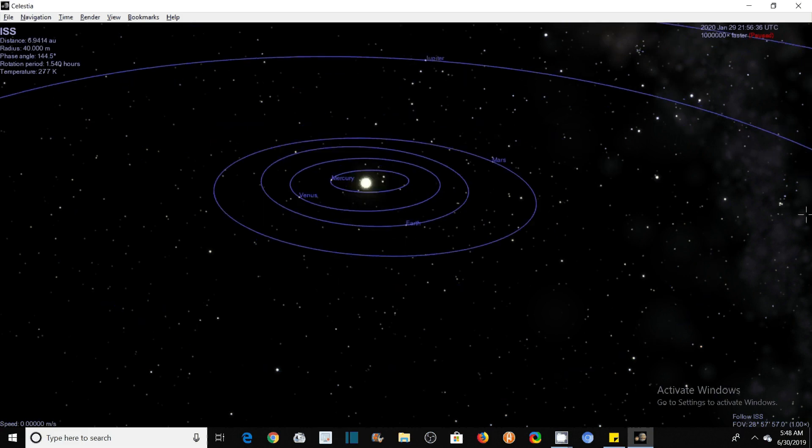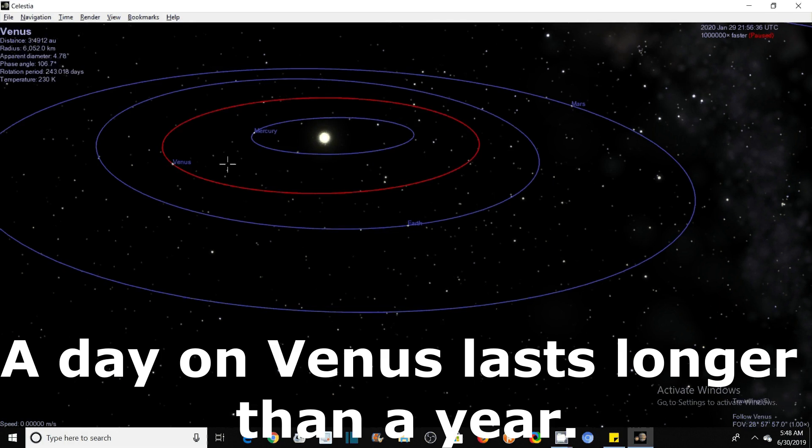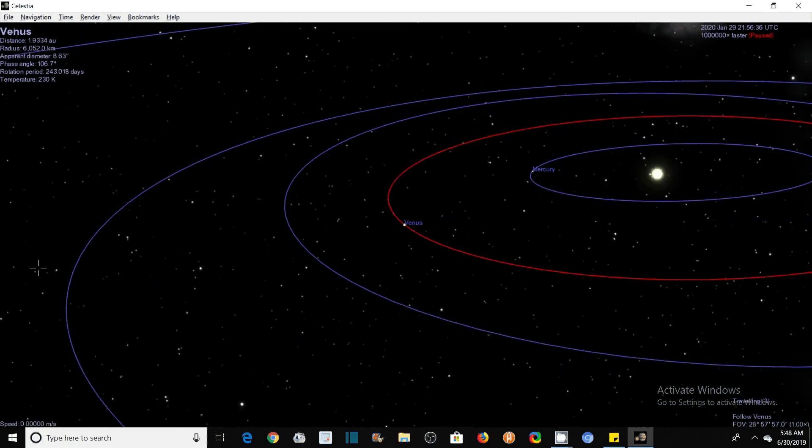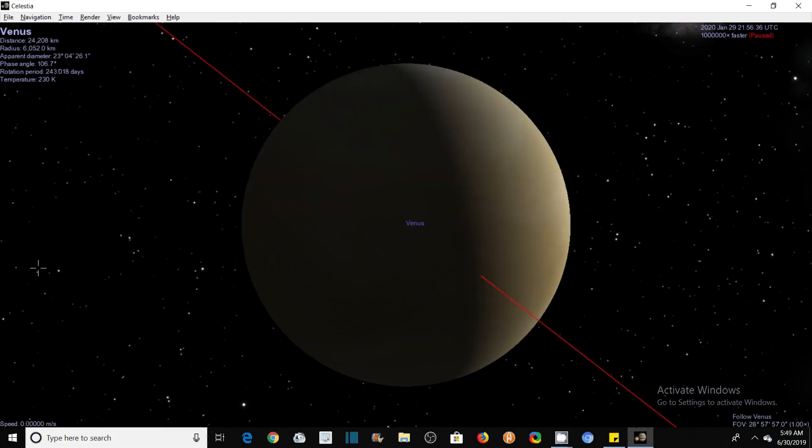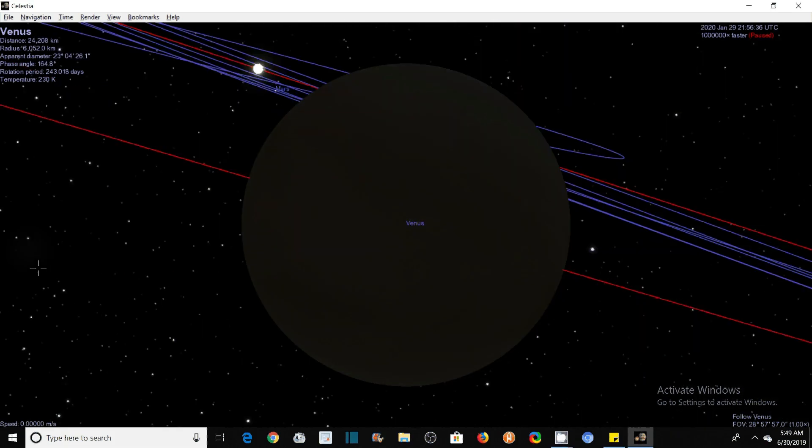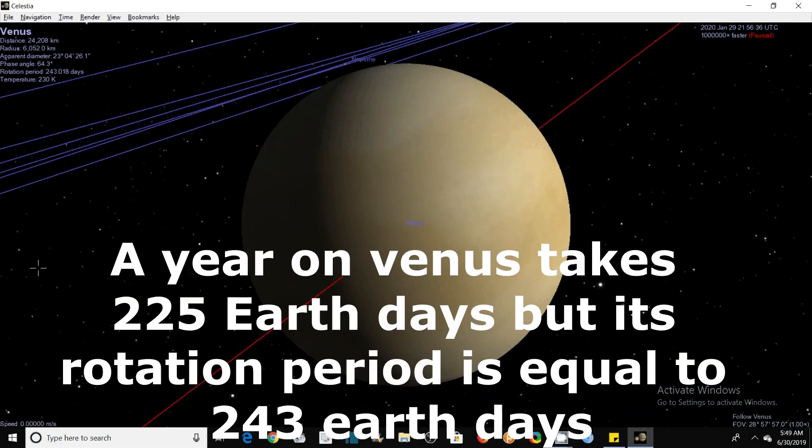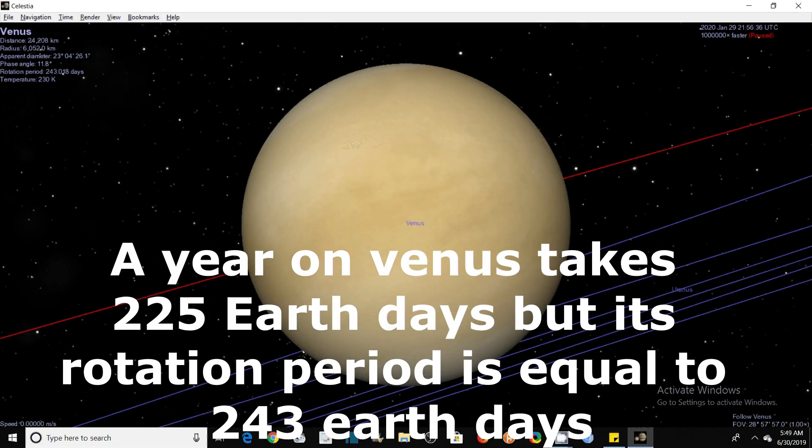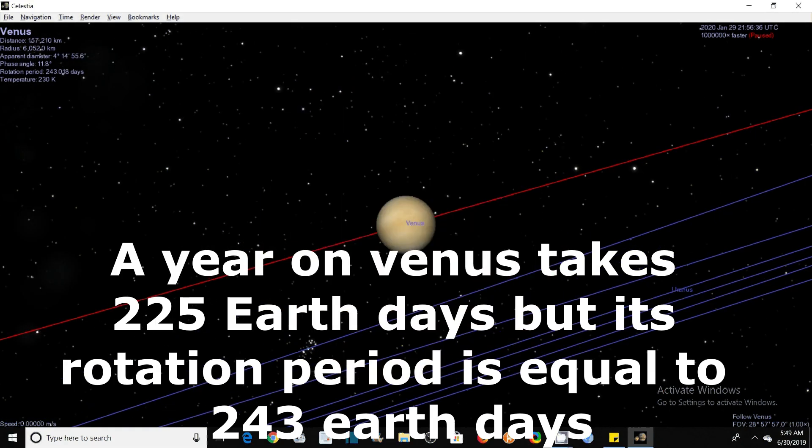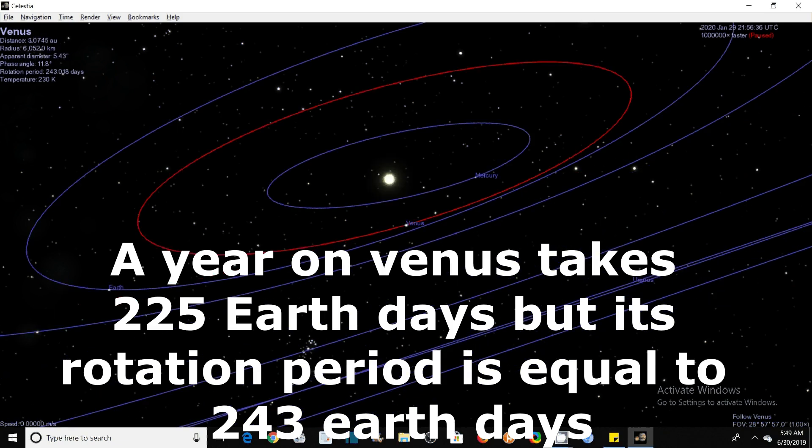You will be surprised to know that a day on Venus lasts longer than a year. This is because Venus rotates on its axis so slowly that its rotation period is longer than its revolution period around the Sun. A year on Venus takes 225 Earth days, but its rotation period on its axis is equal to 243 Earth days, which is longest in the solar system.